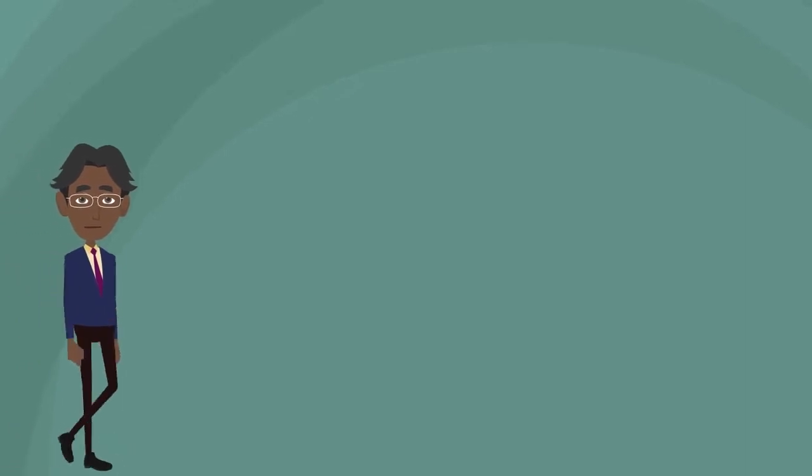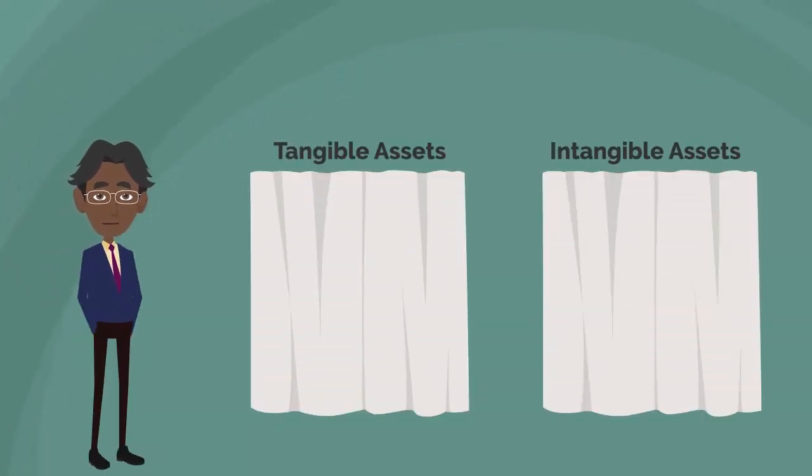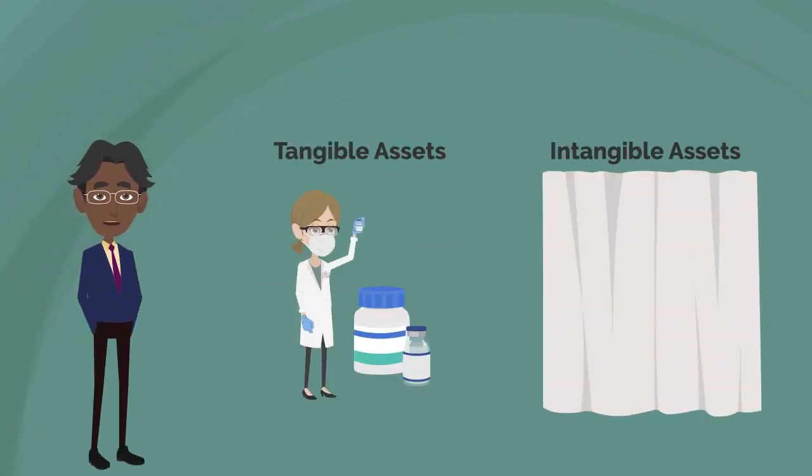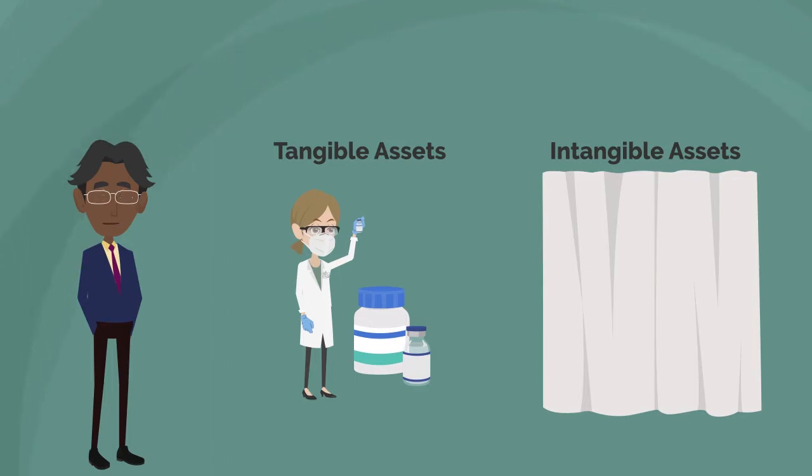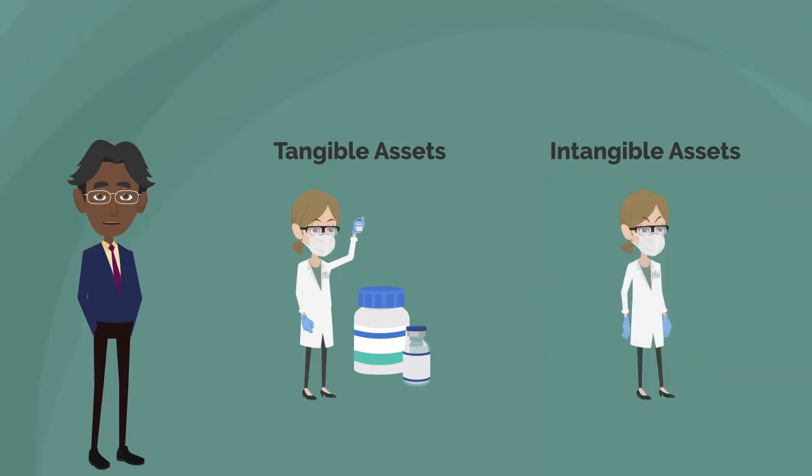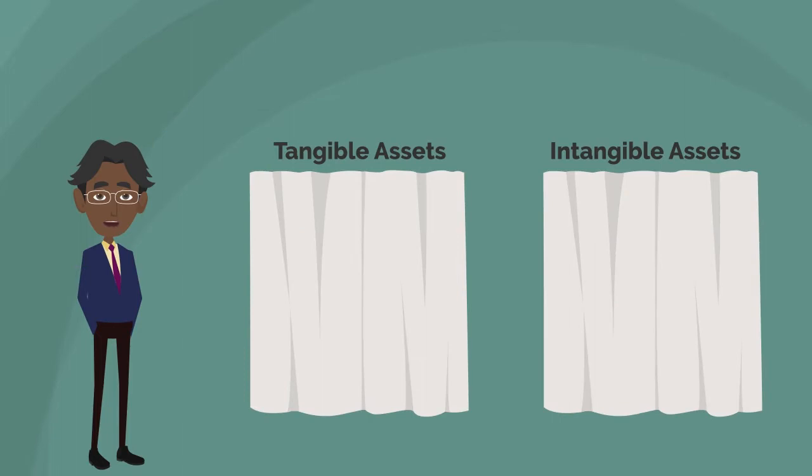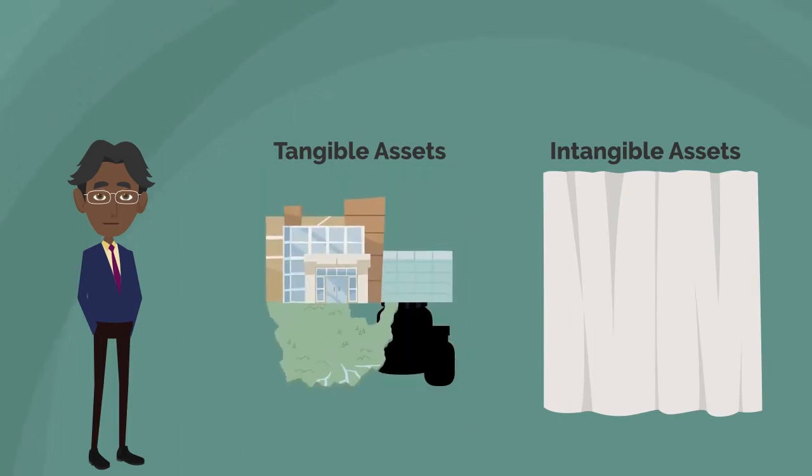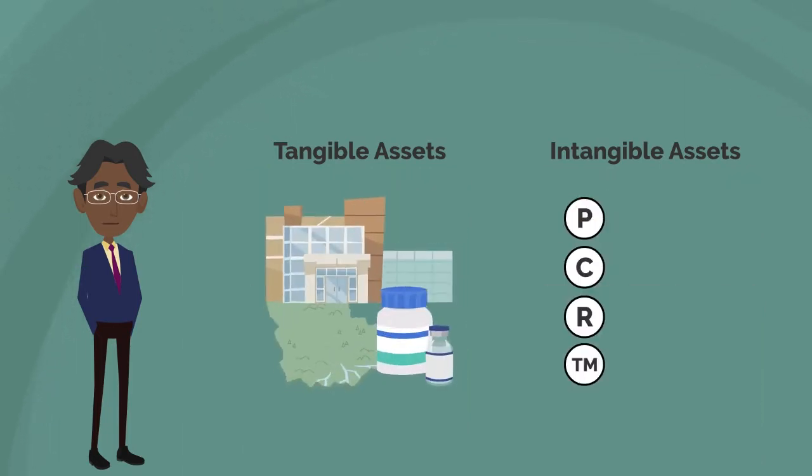Assets come in two types, tangible and intangible. Essentially, you can physically touch or hold tangible assets, while intangibles do not have physical substance. Tangible assets include land, buildings, and equipment, while intangibles include patents, copyrights, and trademarks.